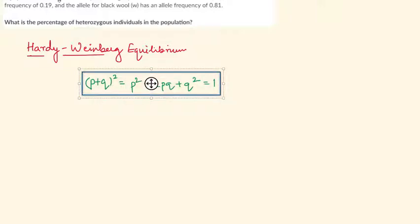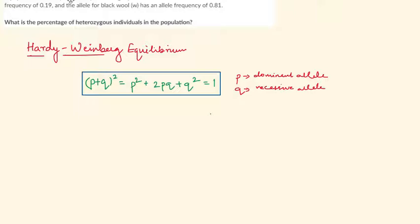Every term in this equation is important. What is p? What is q? What do these terms represent? The p in this equation represents the dominant allele. So when we see the terms p and q, we are saying that the dominant allele plus the recessive allele should always be equal to 1 in a gene pool. This is the first point we get from Hardy-Weinberg equilibrium.